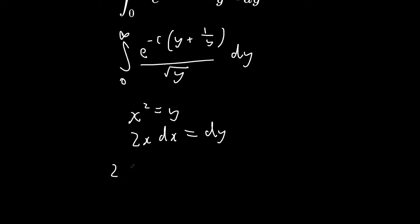So we have two times the integral between 0 and infinity of e to the minus c times (x squared plus 1 over x squared) dx.